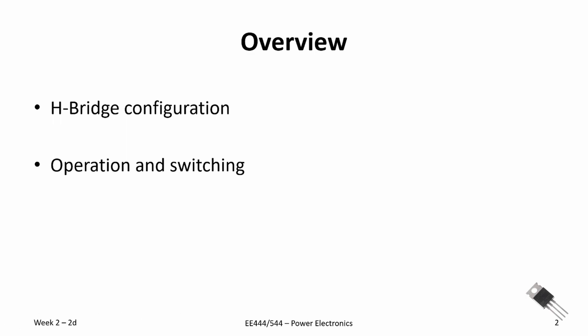As an overview, we're going to look at that H-Bridge configuration. It consists of four switches and the switches work in pairs. Then we'll look at the different operations and how we can use this switch to create AC from DC or possibly change the direction of a motor if that motor is the load.